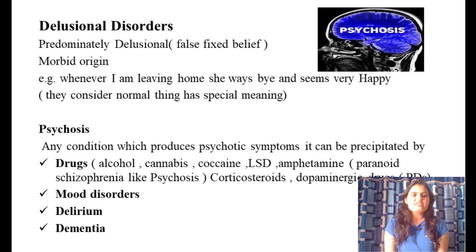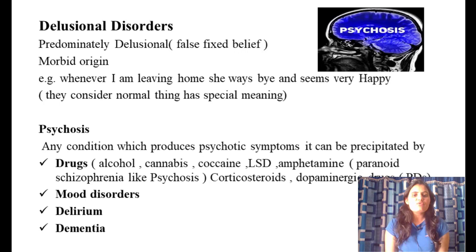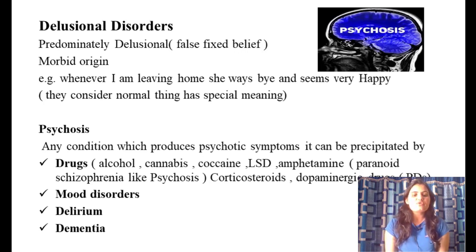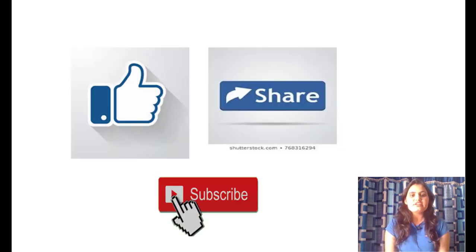Finally, two related conditions: delusional disorder is similar to schizophrenia but involves predominantly false fixed beliefs, while schizophrenia is a more complex condition with first rank symptoms. Psychosis is any condition that produces psychotic symptoms and is not limited to schizophrenia — it can be precipitated by drugs (alcohol, cannabis, cocaine, LSD, amphetamines, corticosteroids, or dopaminergic drugs), mood disorders, delirium, or dementia. In the next video we will discuss psychopharmacology.